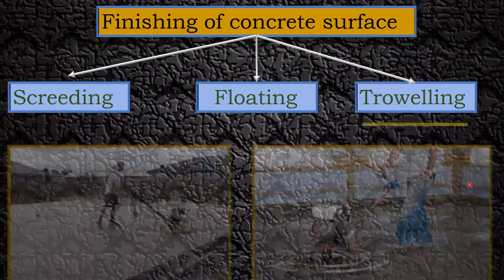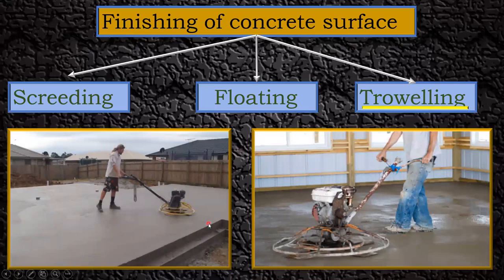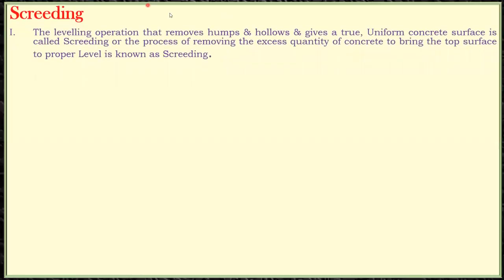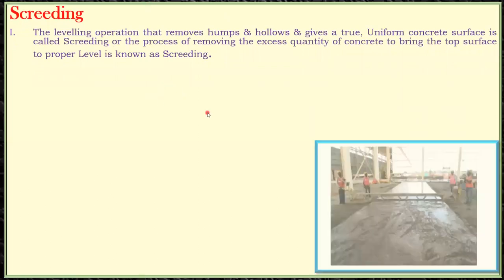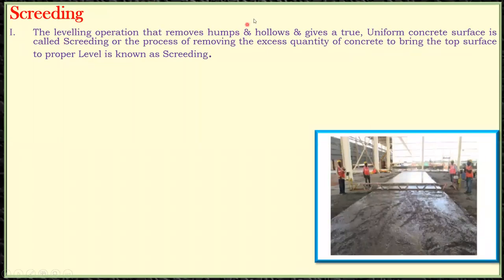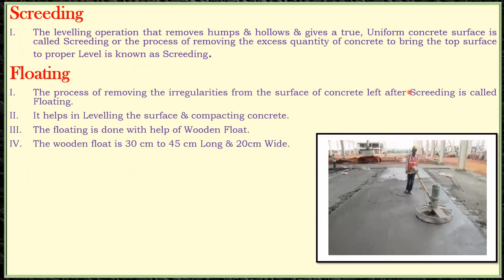The final operation is troweling. Now in more detail: screeding is the leveling operation that removes the humps and hollows and gives a true uniform concrete surface. The process of removing the excess quantity of concrete to bring the top surface to the proper level is called screeding. You can see these people doing the screeding — the concrete surface is not uniform and there is some excess quantity of concrete, but after running the aluminium rod you get a level surface.